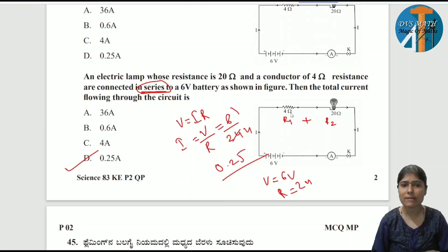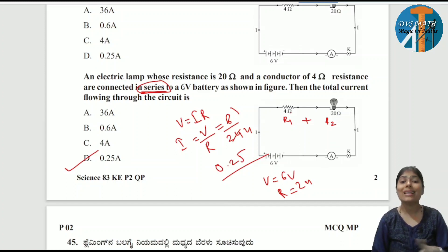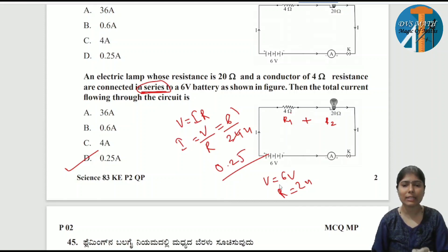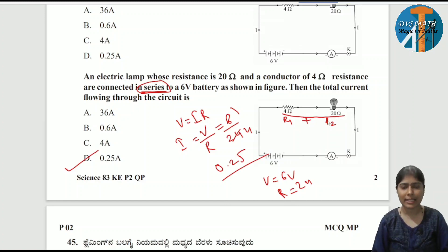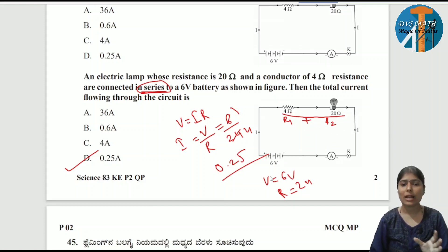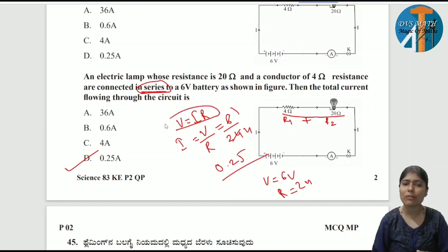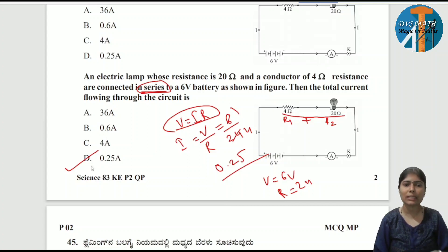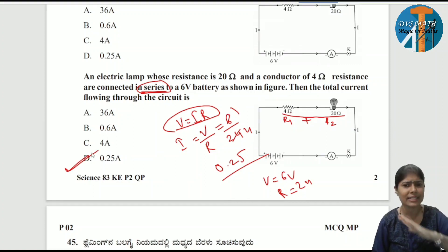One resistance lamp and one conductor are connected in series. Voltage given is V = 6 volts, and resistances are R1 = 4 ohms and R2 = 20 ohms. In series connection, we add the resistances directly: 20 + 4 = 24 ohms. Using the formula I = V / R, that is 6 divided by 24, which equals 1/4 = 0.25 A. Very simple and direct question.